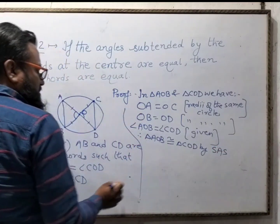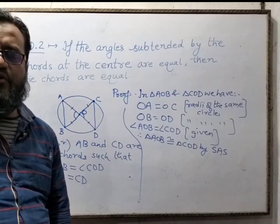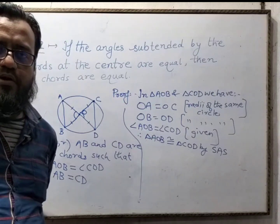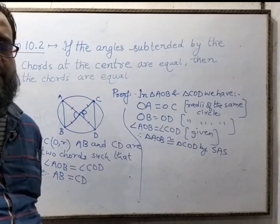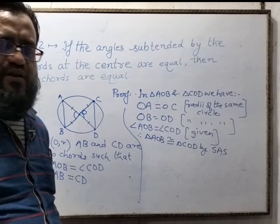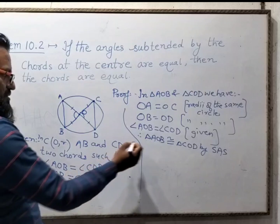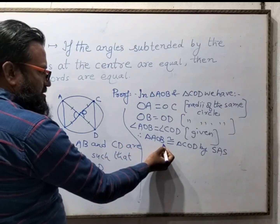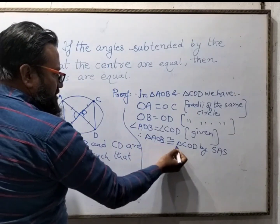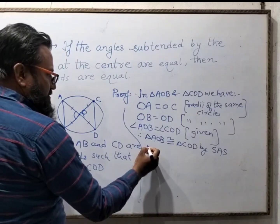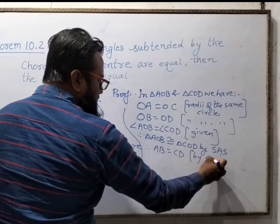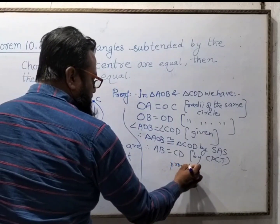In Theorem 10.1, I already told you about CPCT — Corresponding Parts of Congruent Triangles are always equal. AB and its corresponding side CD are corresponding parts. Since both triangles are congruent, therefore AB is equal to CD by CPCT. Hence, we have proved the theorem.